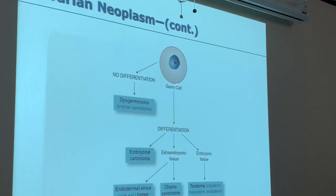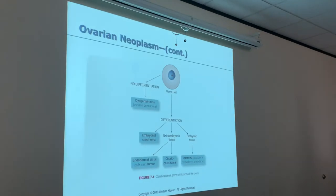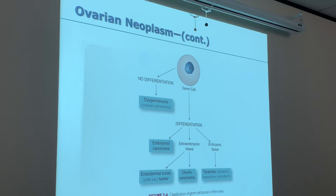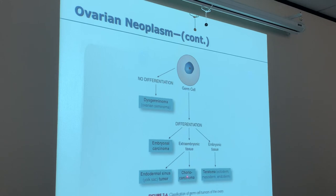Here we have a germ cell tumor. It could be an ovarian seminoma, also called a dysgerminoma. Or it could differentiate into an embryonic carcinoma if it has embryonic tissue in it. It can also be a teratoma, a choriocarcinoma, or a yolk sac tumor. There are several different differentiations of a germ cell tumor.